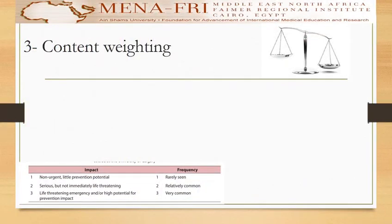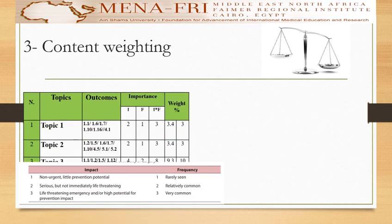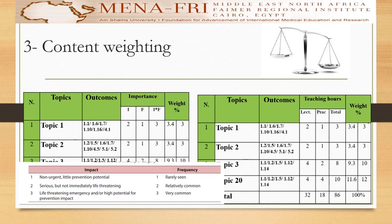Importance and priority can be measured by impact and frequency, as shown in this table. This can help you formulate the importance and frequency of each topic. For example, topic one has an importance of two and a frequency of one; multiplying or adding these gives three, so it will have three questions in the test. This can be done for all items in your curriculum, and then you can calculate the weight — the exam weight totaling 100% — so you know what percentage for each topic to put in your test blueprint.